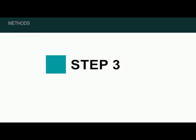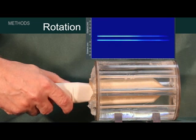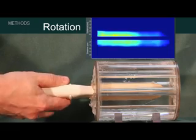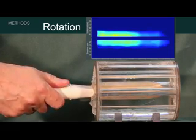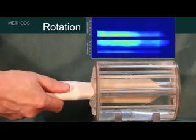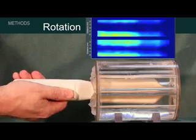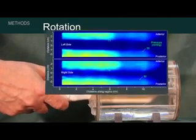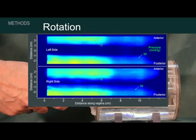Step three: probe rotation. This step provides the pressure patterns for the left and right sides of the vagina and the circumferential tactile image of the vaginal walls. We can use this information to detect irregularities related to underlying muscles or tissue abnormalities, such as foreign body implants, scar tissue, hypertonic muscles, etc.